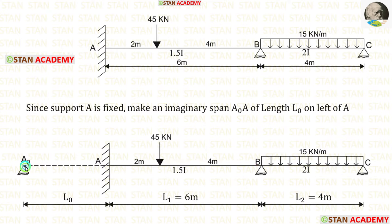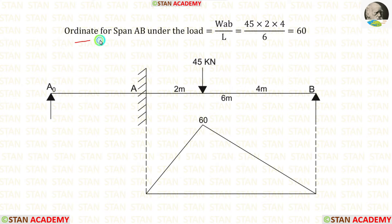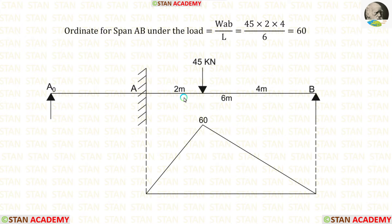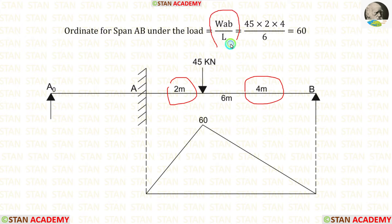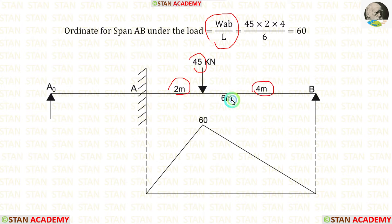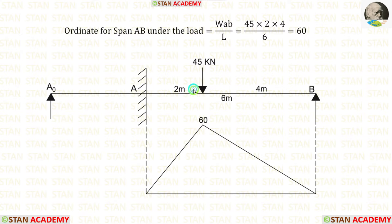Now let us take spans A0A and AB and make the first equation. Let us calculate the ordinate for span AB, assuming the span is a simply supported beam. This point load is not acting at the center, so we have to split the span into two parts: A = 2 m and B = 4 m. The formula for maximum bending moment under the point load is WAB upon L, giving W = 45, A = 2, B = 4, L = 6. After calculation, we get 60. The diagram will be in the shape of a triangle.